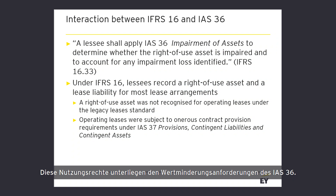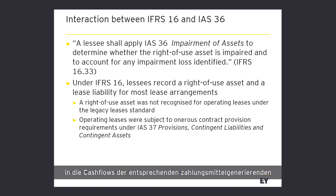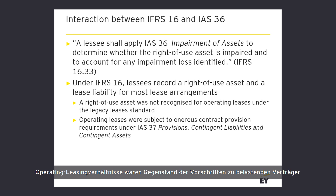Sure. Under IFRS 16, lessees are required to record right-of-use assets and lease liabilities in most lease arrangements in their statements of financial position, and right-of-use assets are required for impairment testing under IAS 36. Previously, under the legacy standard IAS 17, no such assets were recognised for operating leases, so there were no operating lease-related assets to be tested for impairment. Lease payments were included in the cash flows of the related cash-generating unit, or CGU, when appropriate. Operating leases were subject to onerous contract provision requirements of IAS 37 — provisions, contingent liabilities and contingent assets.